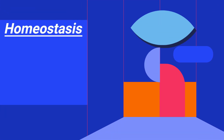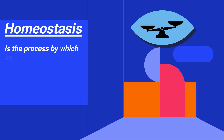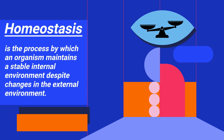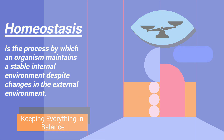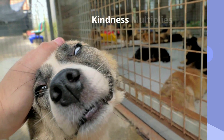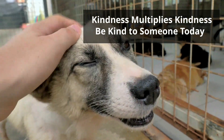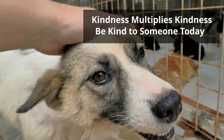In summary, homeostasis is the process by which an organism maintains a stable internal environment despite changes in the external environment. This keeps the internal environment in balance and keeps the organism alive. Thanks for watching, and remember: kindness multiplies kindness. Be kind to someone today.